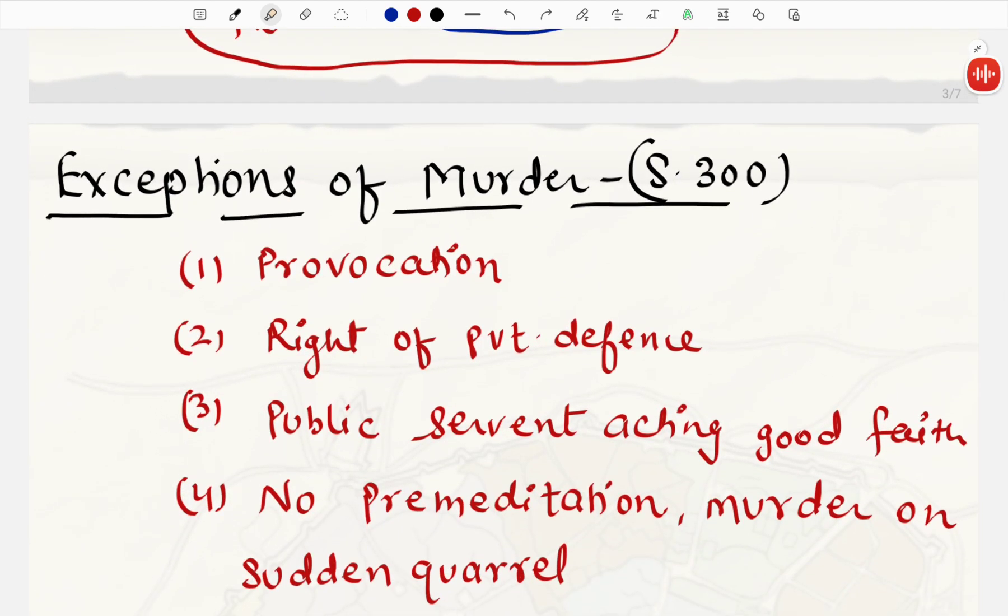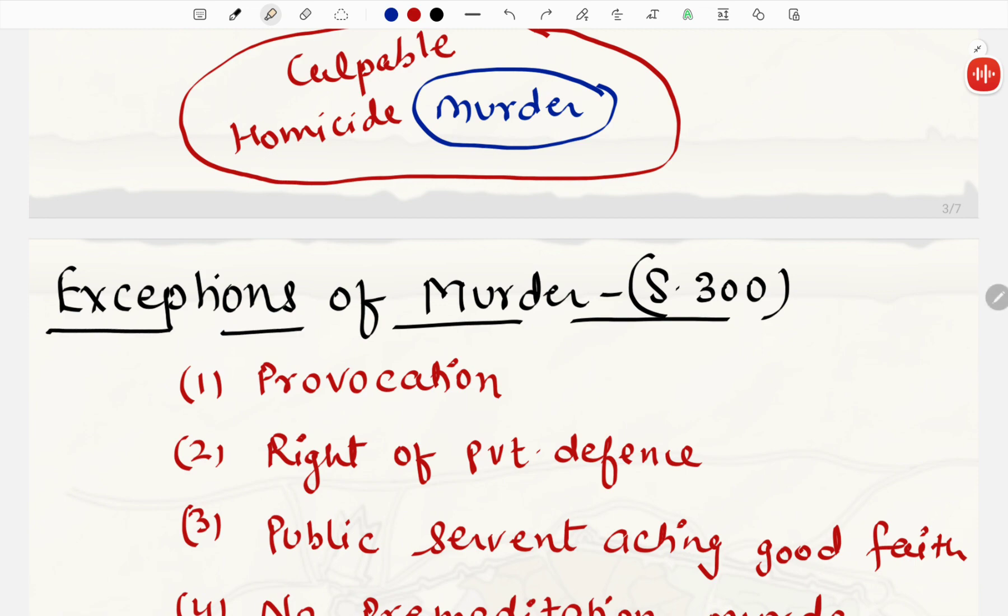Iske baad ek general note hai. Section 304 provides a punishment for culpable homicide not amounting to murder. Jo bhi culpable homicide hai, uski punishment agar kahi mention hai, to section 304 mein mention hai. Culpable homicide kiske andar mention hai? Section 299. I hope this is getting some sense. Culpable homicide amount to murder.